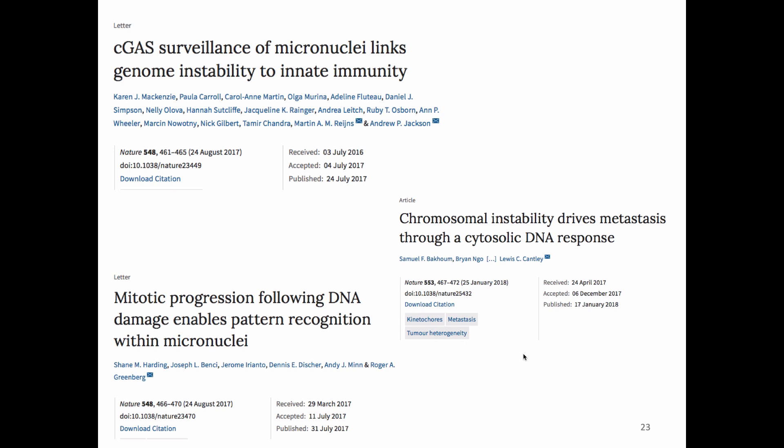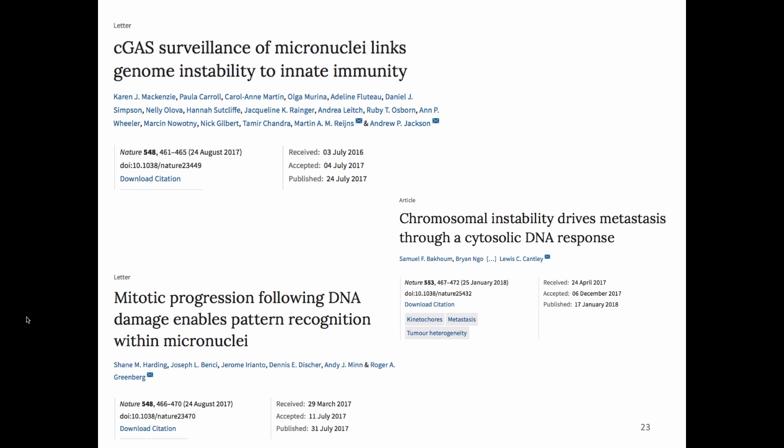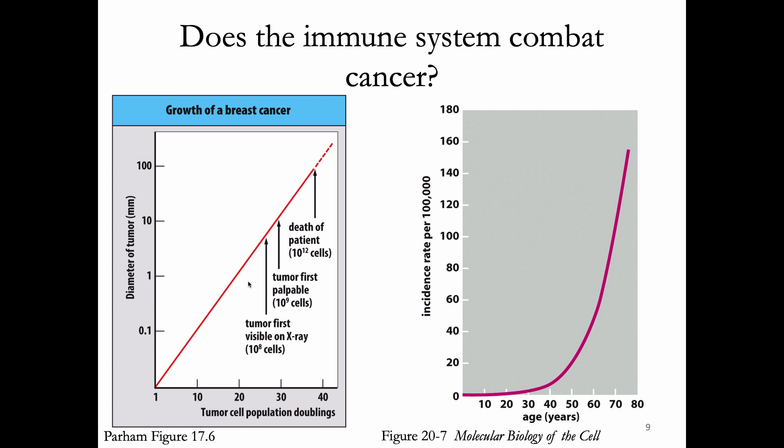When a tumor is first visible on X-ray, it's 10^8 cells; when first able to be felt, it's 10^9 cells. So there's a whole process between being one mutant cell and being 10 million mutant cells, and most likely all the immune evasion is happening during that process before the tumor is detectable.